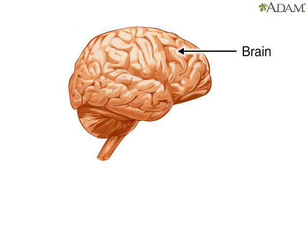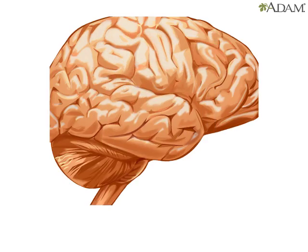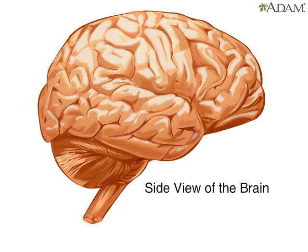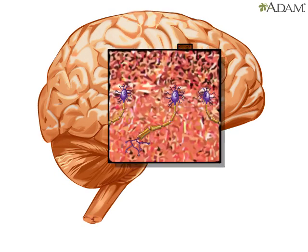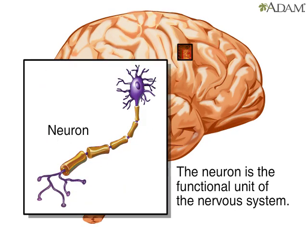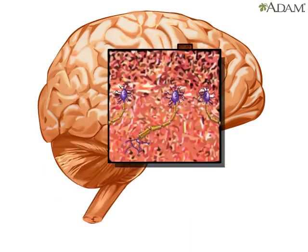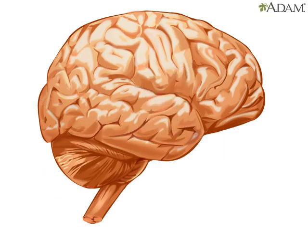The brain is composed of more than a thousand billion neurons. Specific groups of them, working in concert, provide us with the capacity to reason, to experience feelings, and to understand the world. They also give us the capacity to remember numerous pieces of information.